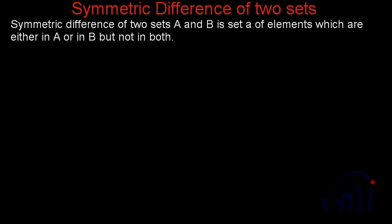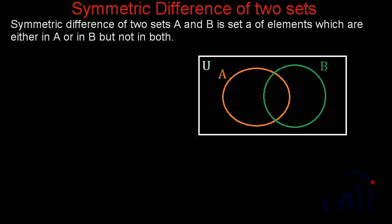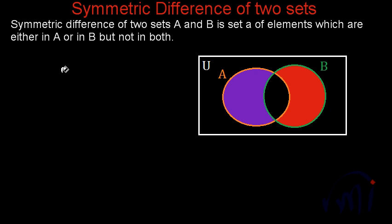If I draw a Venn diagram, the symmetric difference will be the set of elements which are either in set A or in set B but not in both. We are supposed to omit the elements which are in the common or overlapping area. The symmetric difference will be the union of the purple area and the red area.